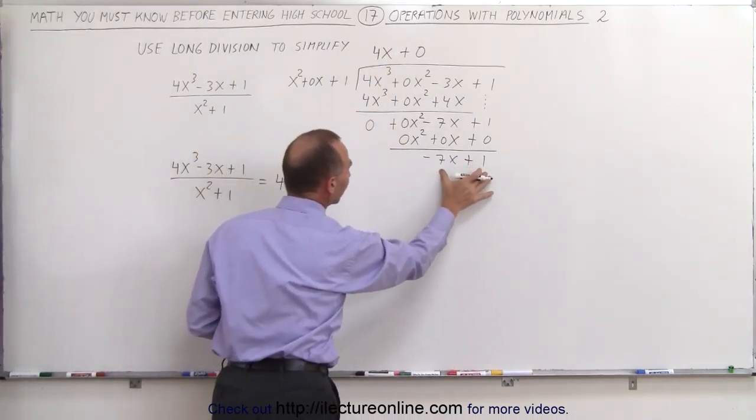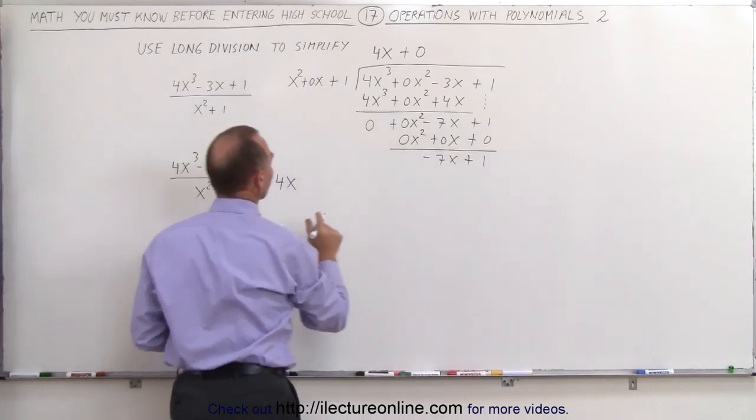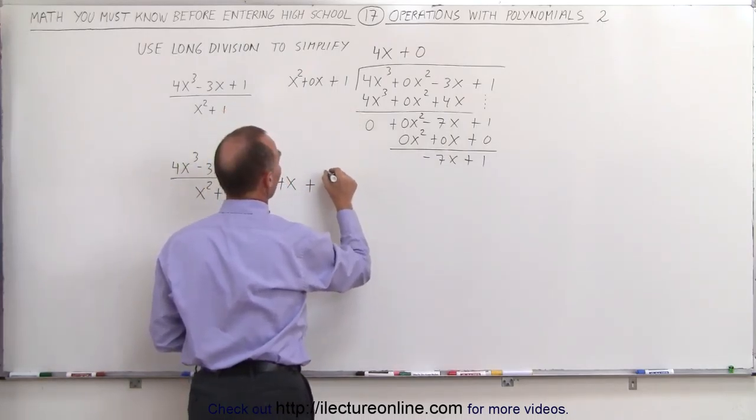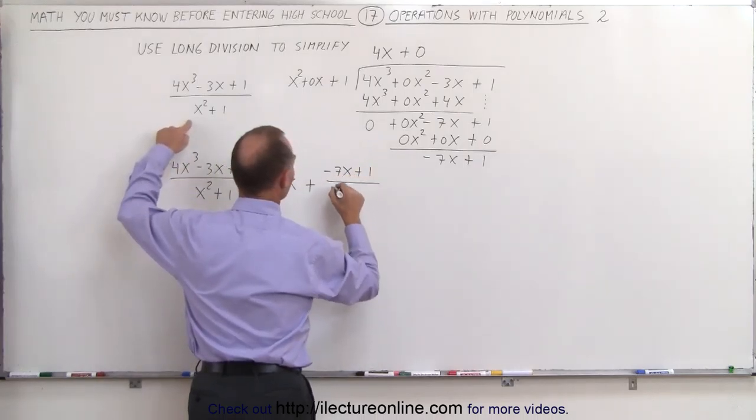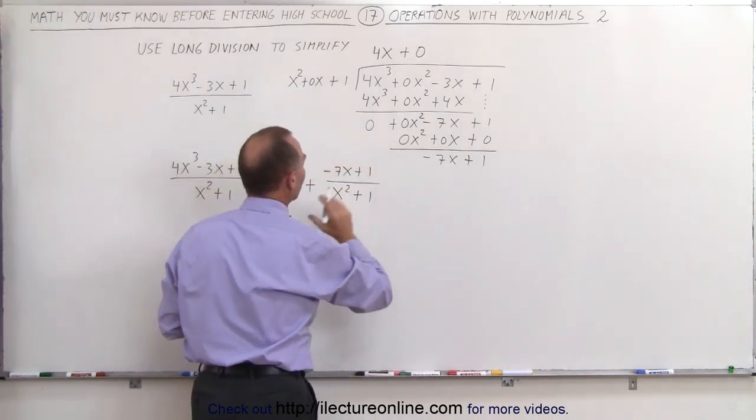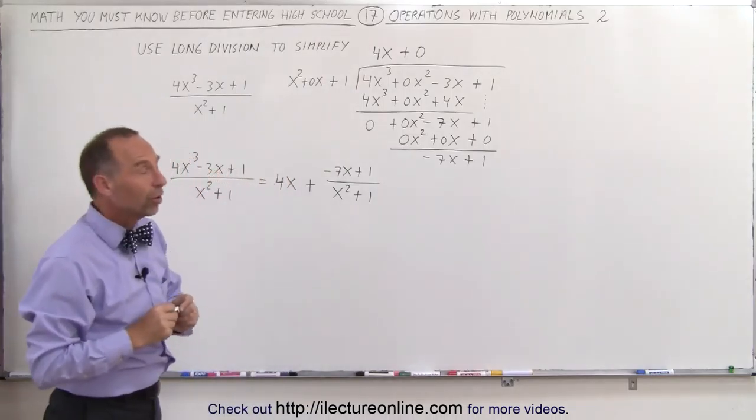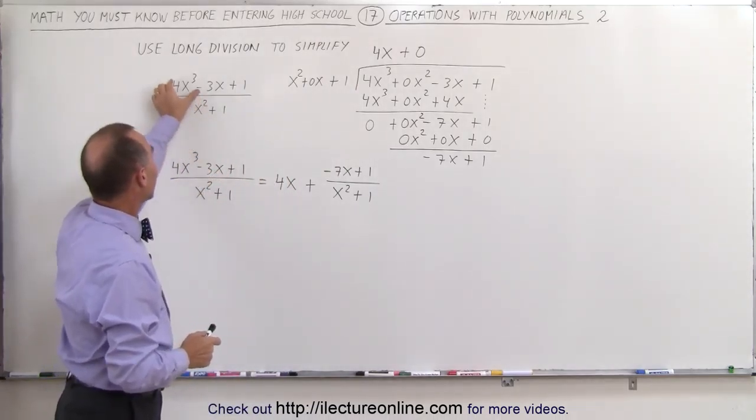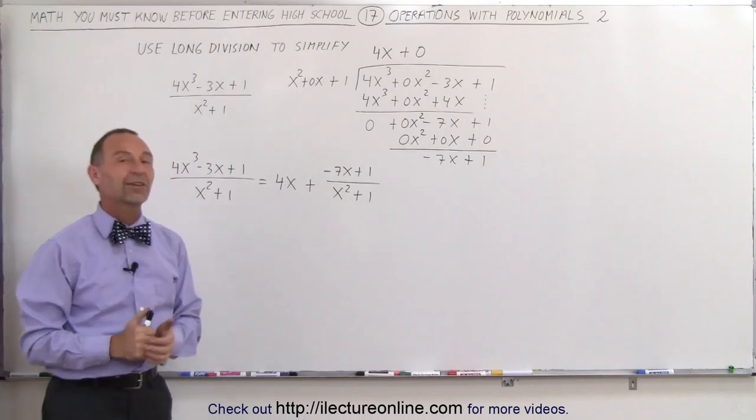And the remainder is this, divided by the denominator, so plus the quantity minus 7x plus 1, divided by the denominator x² plus 1, which is the quotient, or the result, of dividing this into that numerator. And that's how that's done.